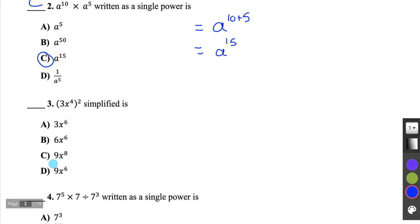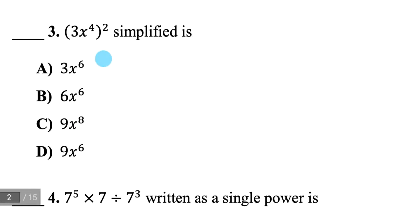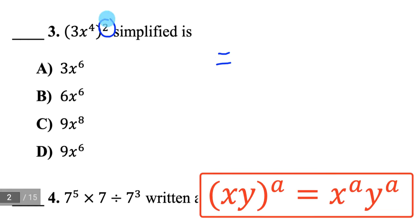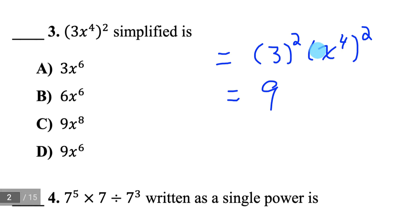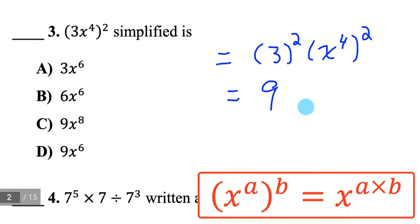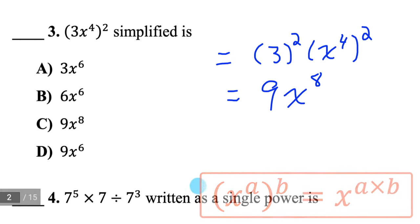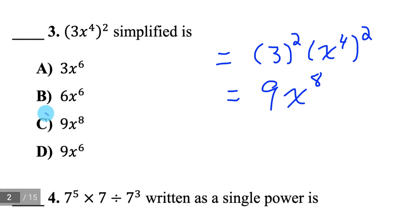Question 3: I have a power of a power where the base is a product of two things. The exponent rule tells me I put the outside exponent on both factors of the base, so I have to square the 3 and square the x to the 4. 3 squared is 9, and x to the 4 squared — keeping the base and multiplying the exponents — gives 4 times 2 = 8. So the answer is 9x to the 8, C.